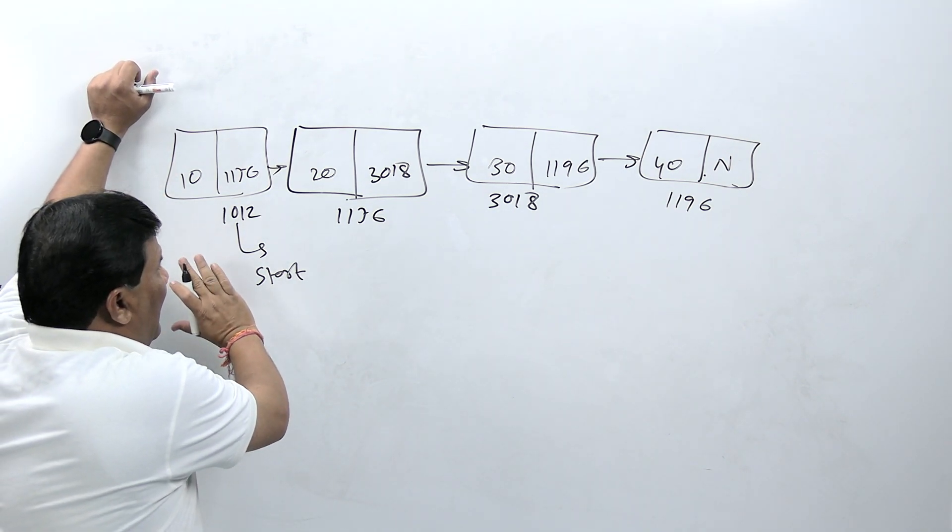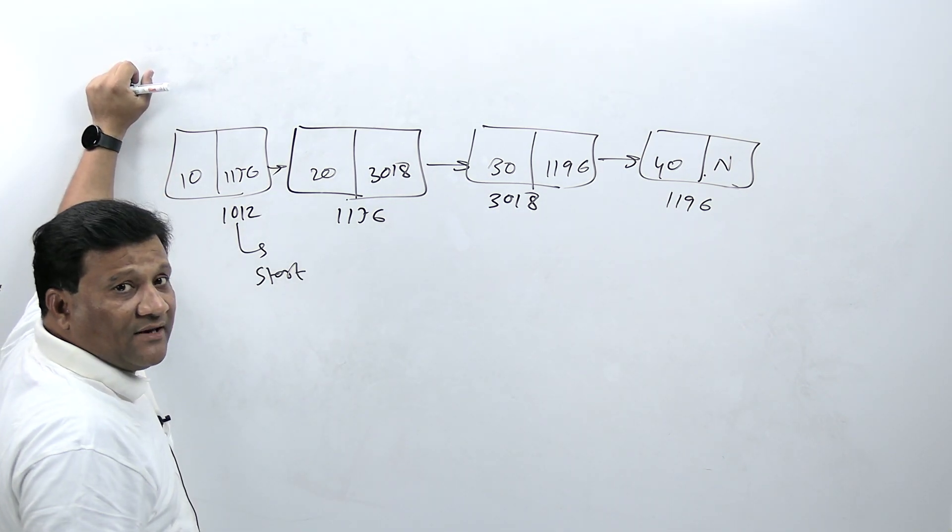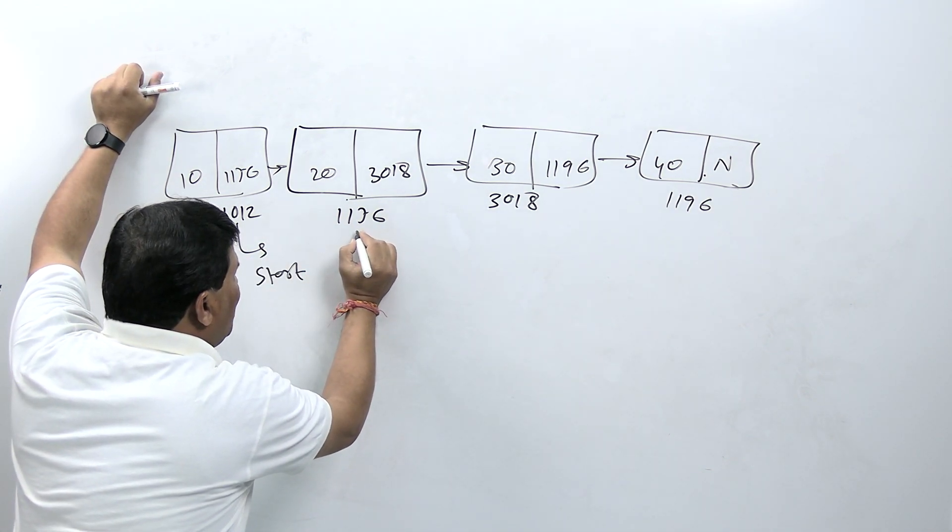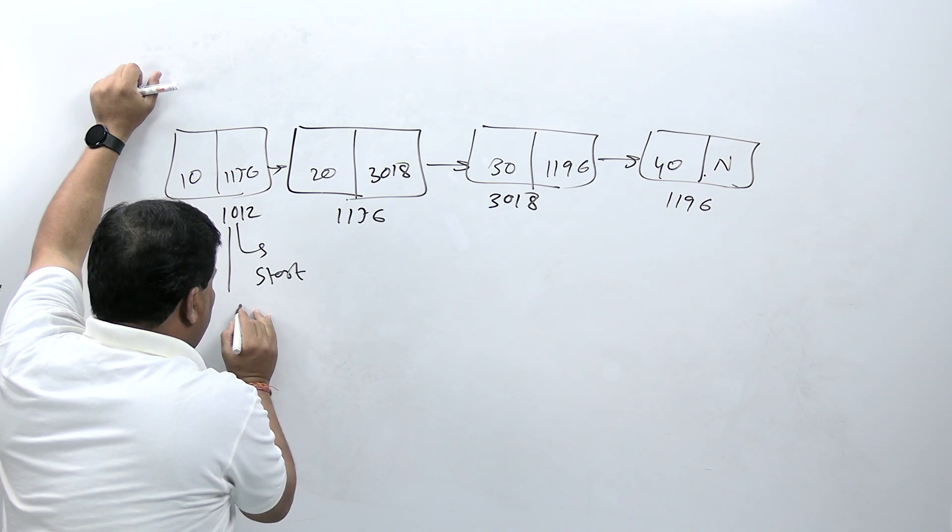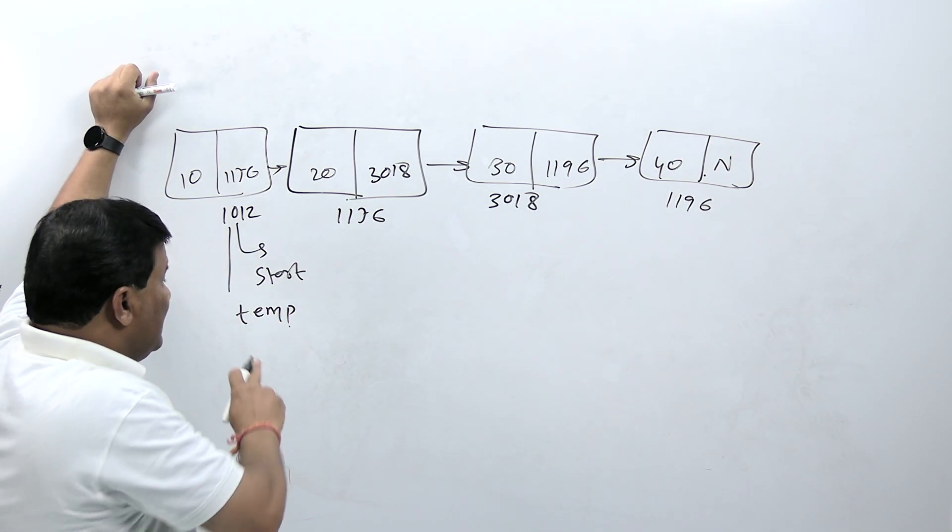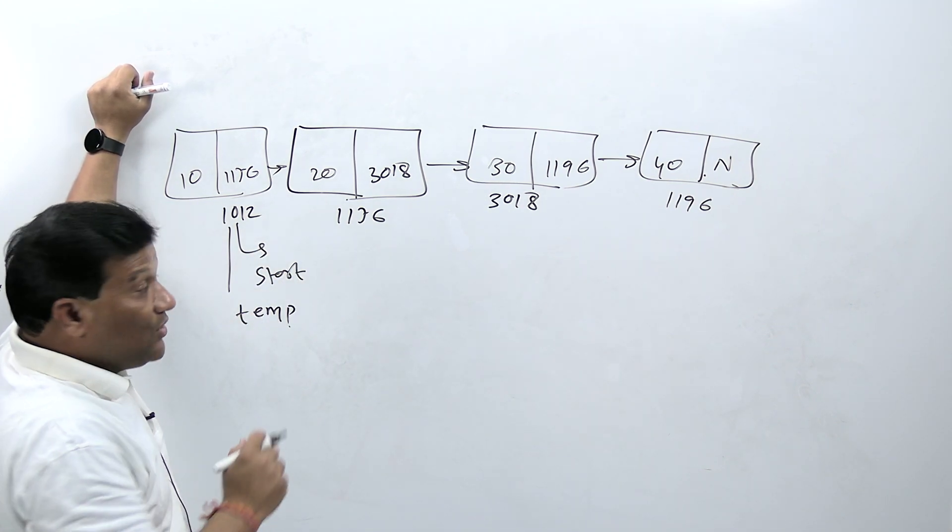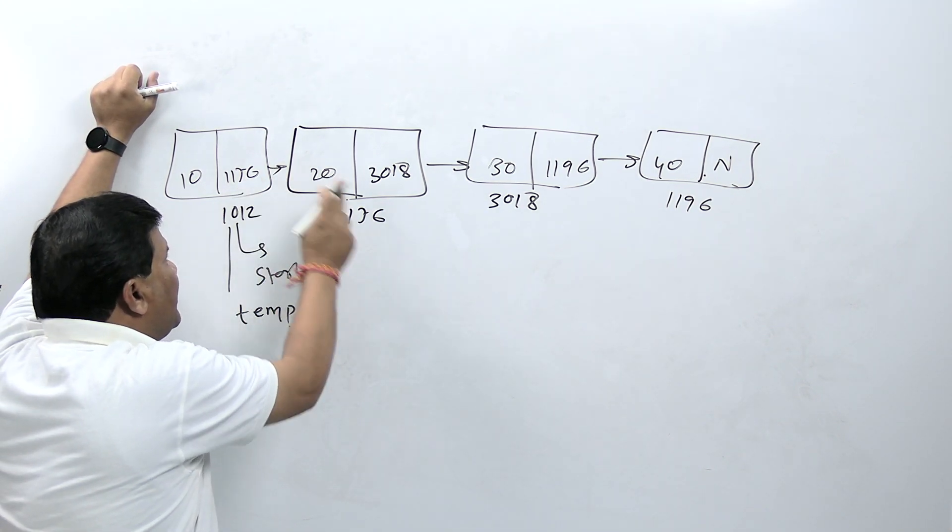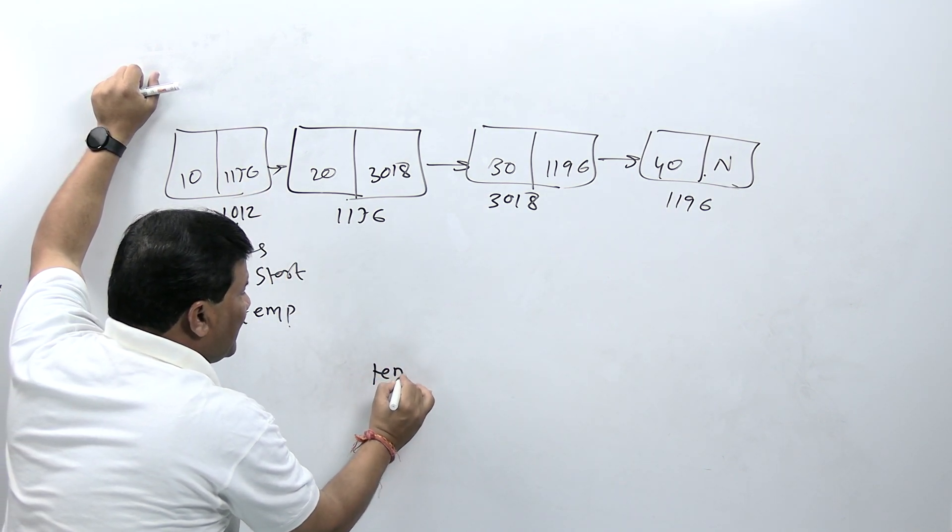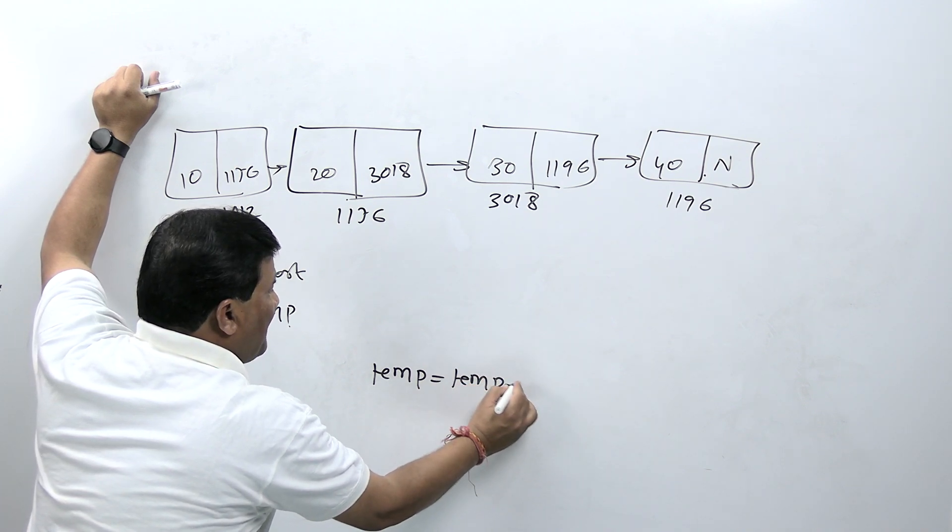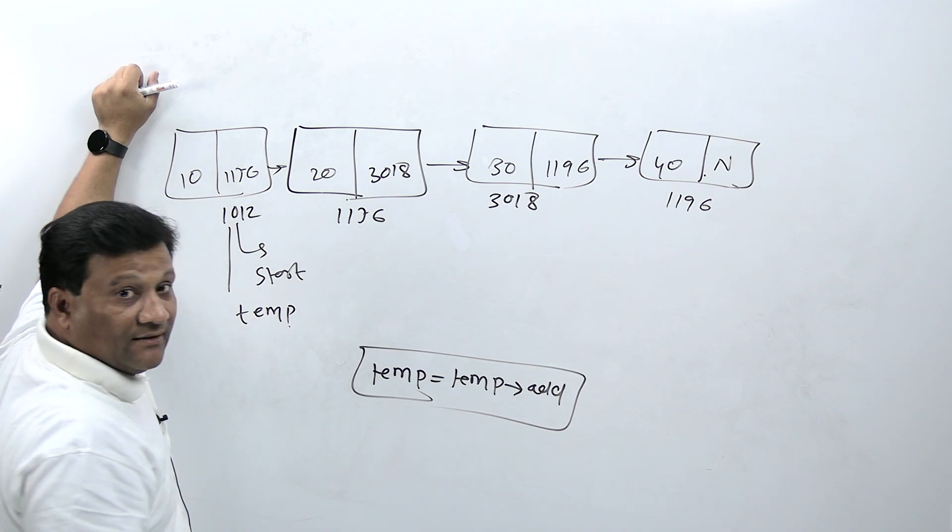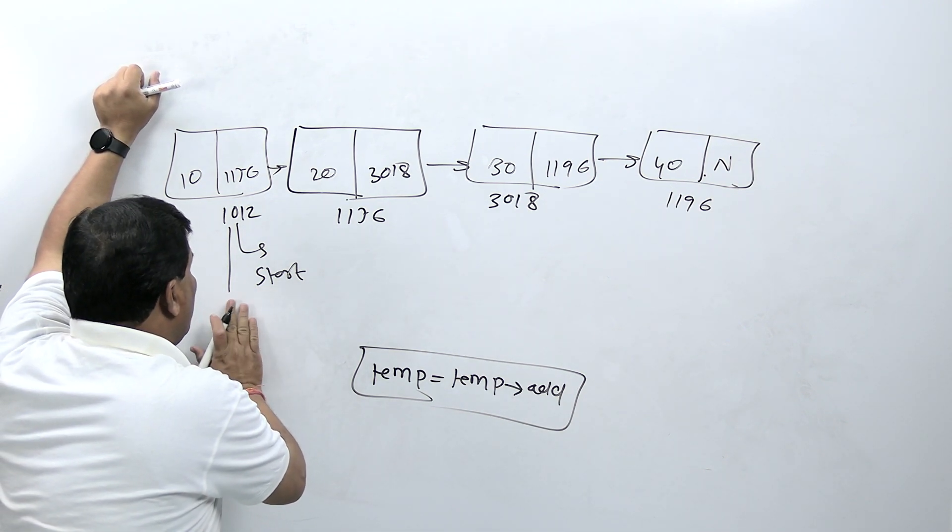In single linked list, forward direction traversing is very easy. For example, if a pointer is here and we have a temporary pointer at start position, we can easily move to next node because this node contains address of next node, 1176. Simply write temp equals temp of address, so easily this node is traversed to the next node.